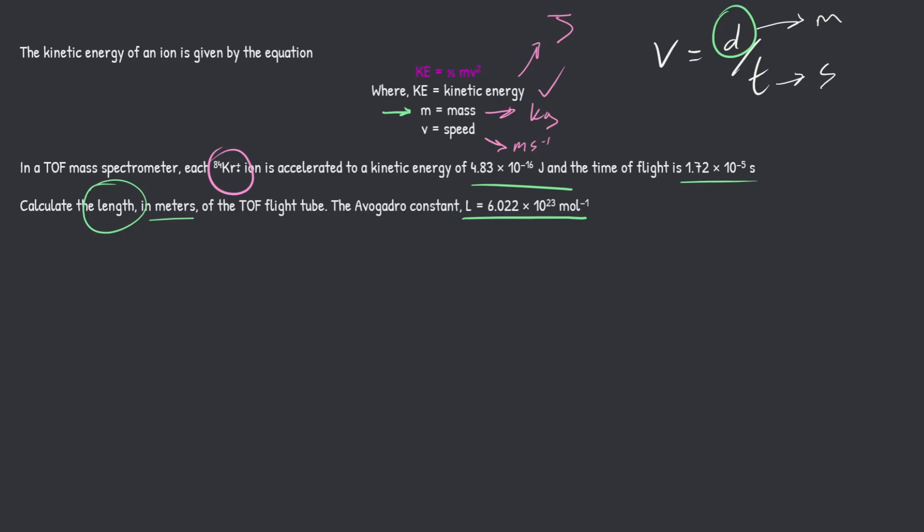So they've given us the mass number of this krypton ion. So what we can do here is we can use our units and cancel them in order to find the mass, because that's what we ultimately want. So if we looked at the atomic mass, the relative atomic mass of this 84 krypton ion, it has a mass of 84. What is the unit for this? Is it grams, kilograms? It's grams per mole. That's just what the relative atomic mass units are, or relative molecular mass units, also known as MR.